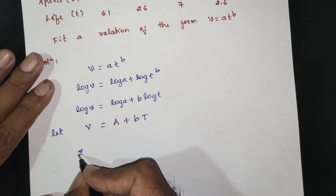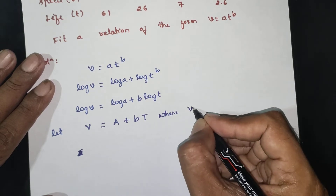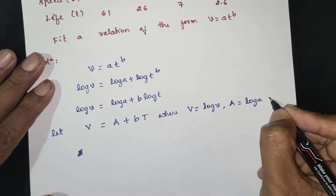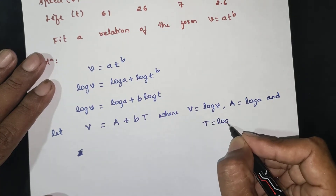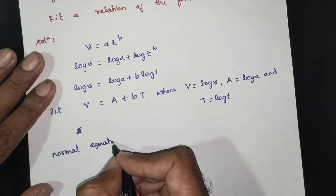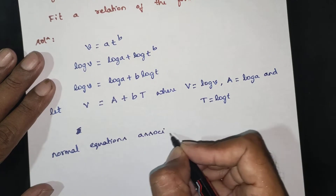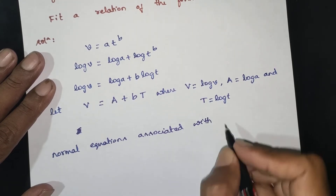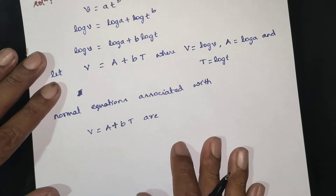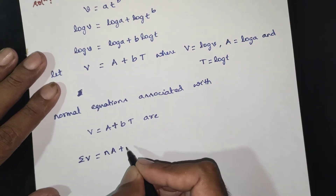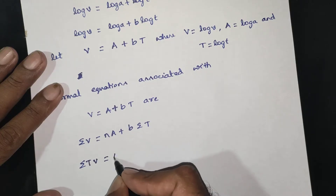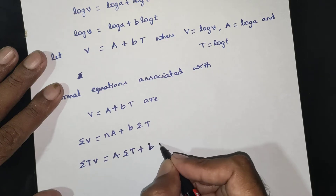We will have summation terms: V and log v, log a, log t. The normal equations become: summation of V is equal to n·A plus b·summation of T, and summation of T·V is equal to A·summation of T plus b·summation of T square.